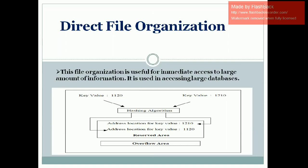The next topic is index file organization, which is related to hash functions we discussed in last sessions. The definition is that records are randomly placed throughout the file — there is no order. Records can be placed at any position in the file, not restricted to sequence order. Using a hash function h(x), we get a number, and based on that we can place the record at any location.